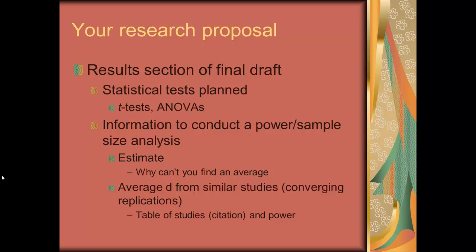What does this mean for your research proposal? In the results section of the final draft, you need to state what statistical tests you have planned — T-tests, ANOVA, correlations — and present information to conduct a power sample size analysis. I would prefer you look for average effect sizes, Cohen's D or eta squared, from similar studies. Present that information in a table in your paper. I've created a format for that since tables are hard to set up in APA style. That's what I'd like for your research proposal in the final draft.